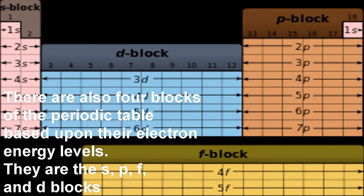There are also four blocks of the periodic table based upon their electron entry levels. They are the S, P, F, and D blocks.